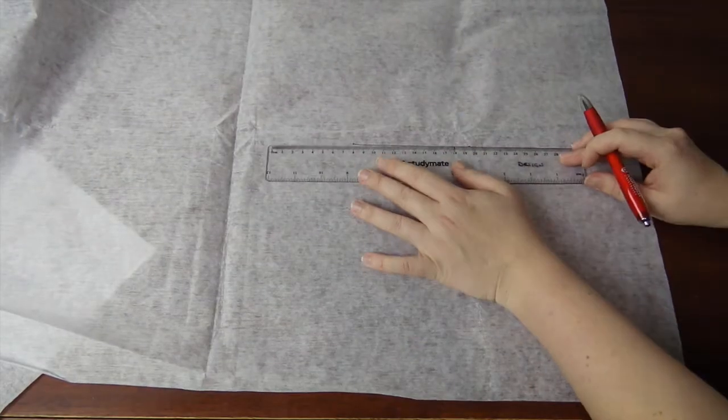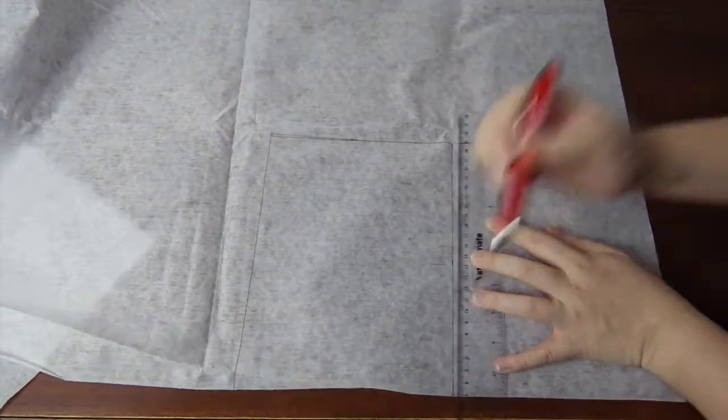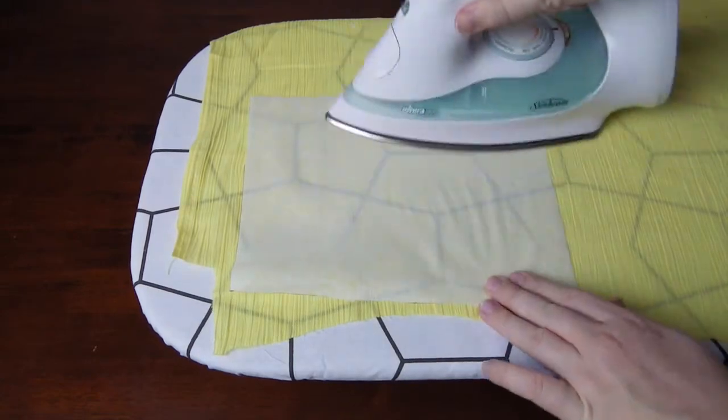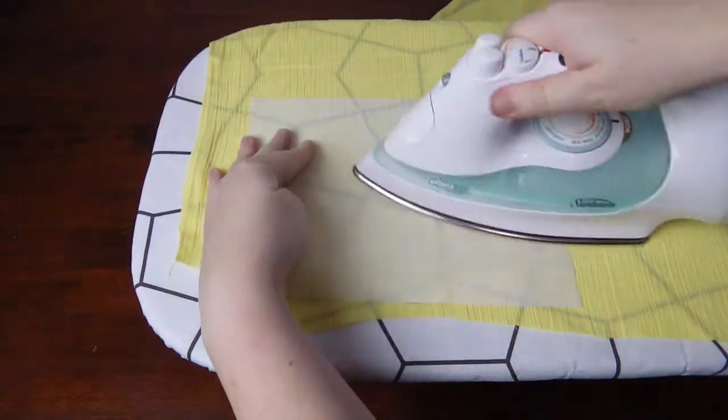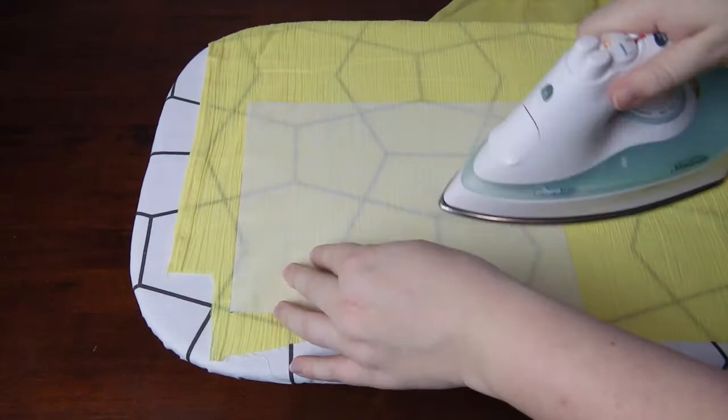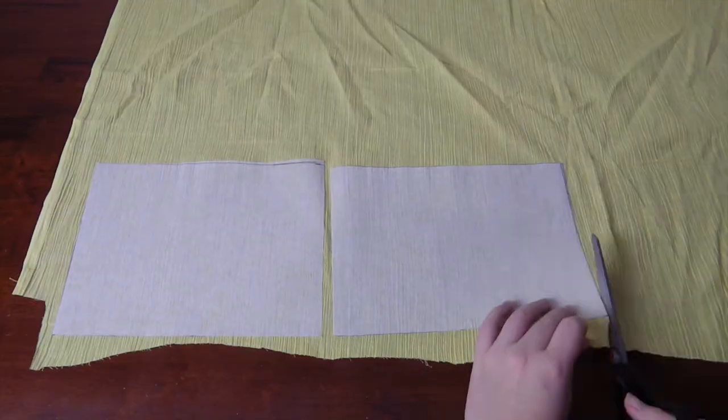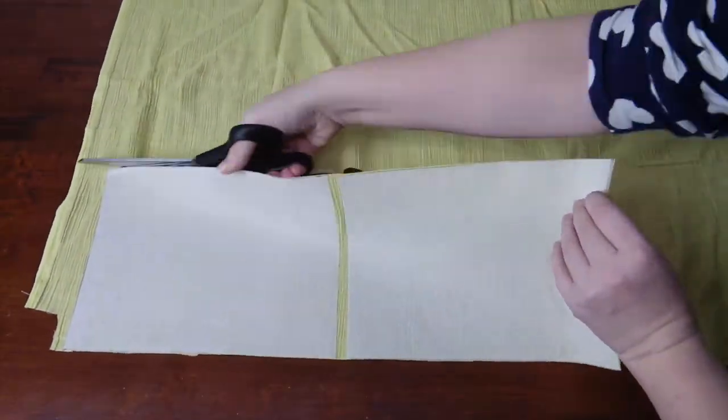Getting out my interfacing, I measured and marked the rectangles. Then I cut them out. As I'm using iron-on interfacing for this project, I grabbed my iron and ironing board and adhered the interfacing to the cotton base. This made it super easy to cut out the rectangles.